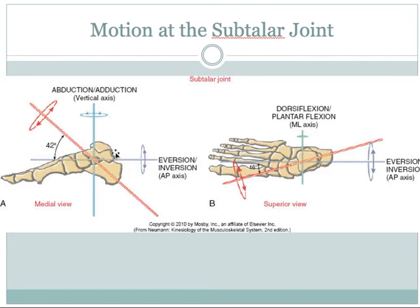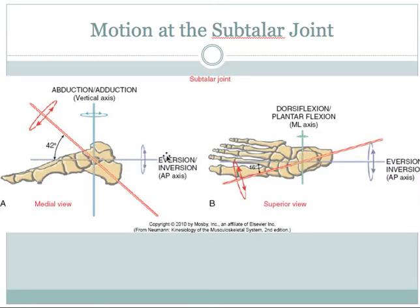Movement of the subtalar joint does not occur in the anatomical planes of the body — the axis is oblique to those planes. The axis of motion is tilted superiorly from horizontal about 42 degrees. So instead of having pure inversion-eversion motion, we get a mixture of eversion-inversion motion and rotational motion, which is what we call abduction-adduction in the foot.